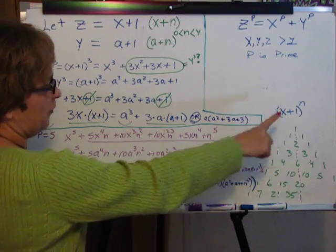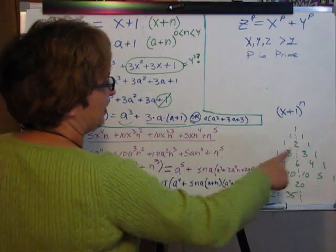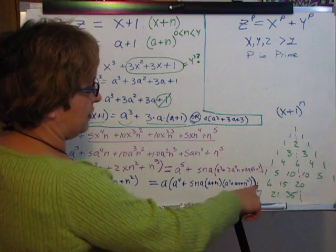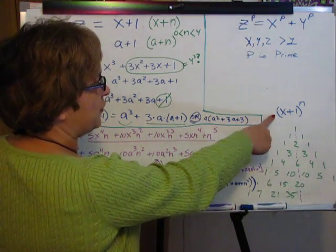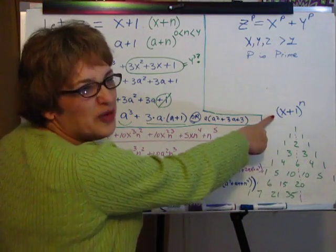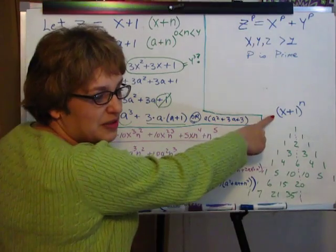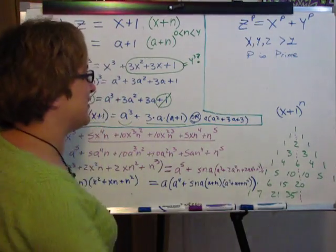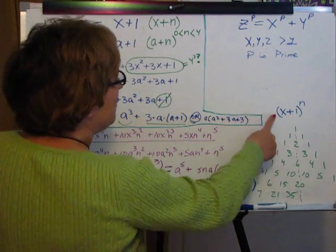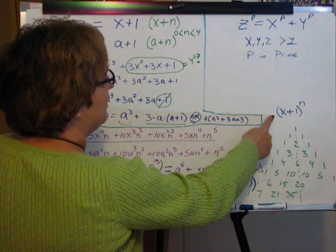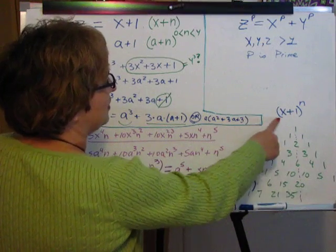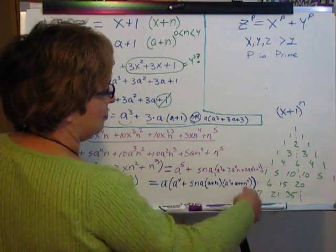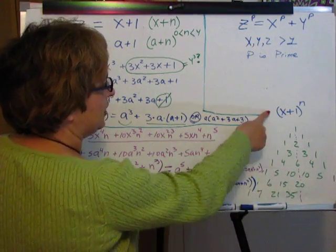I don't know if you're familiar with Pascal's triangle. This is something that comes in very useful when you're doing — I believe it's called binomial expansion. I'm trying to remember stuff from high school, but this graph is like a cheat sheet.